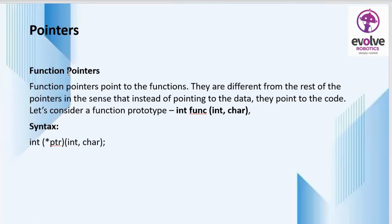The next type is function pointers. Function pointers point to functions. They differ from other pointers in that instead of pointing to data, they point to code. For example, given a function prototype int function(int, cap), the syntax for declaring a function pointer is: int star ptr(int, cap).